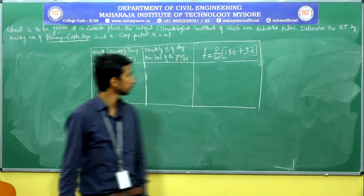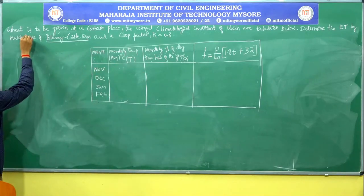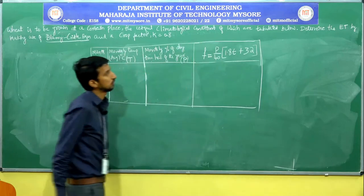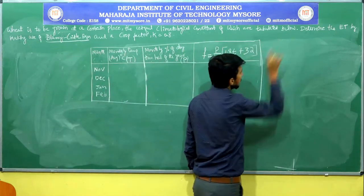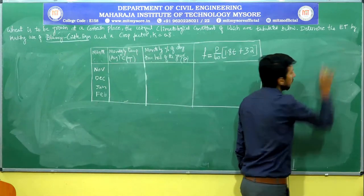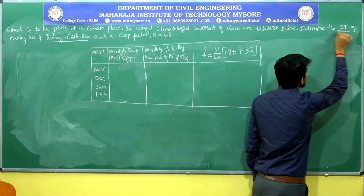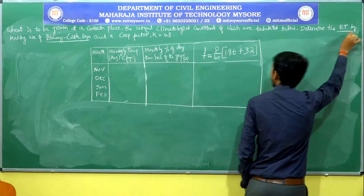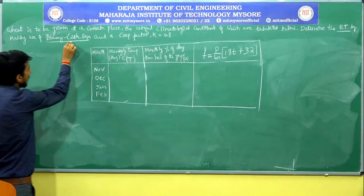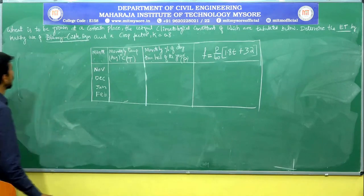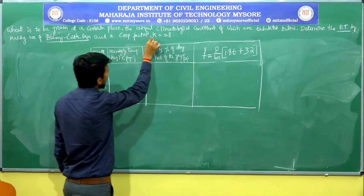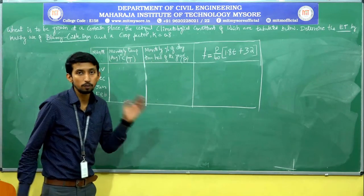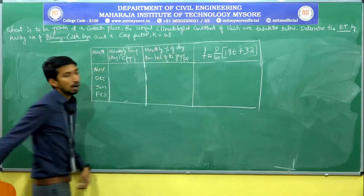We shall continue with the next problem. Wheat is to be grown at a certain place, the climatological conditions of which are tabulated below. Determine the evapotranspiration — also called consumptive use — by using Blaney-Criddle's equation. The crop factor K equals 0.8. This is very similar to the previous problem; the only change is K = 0.8.